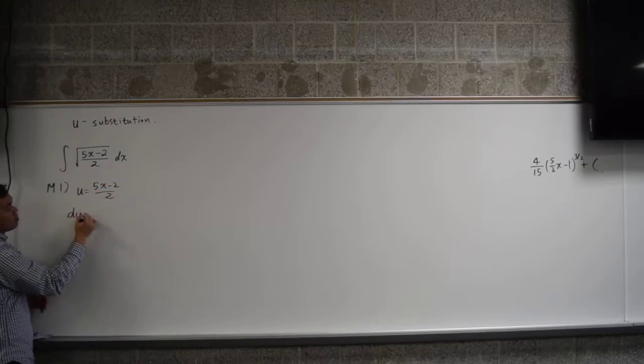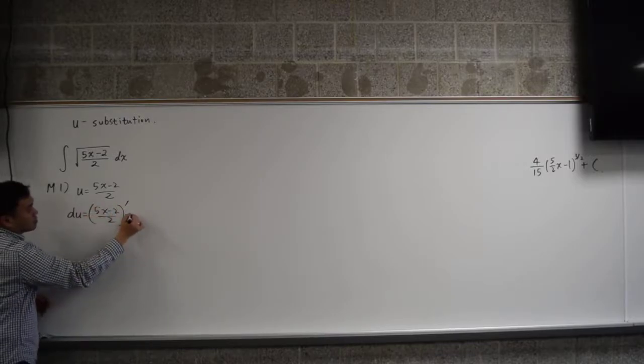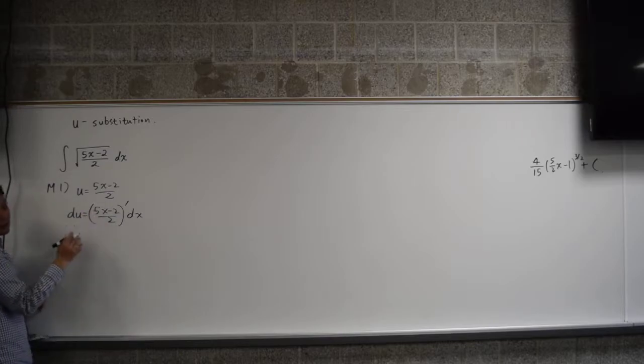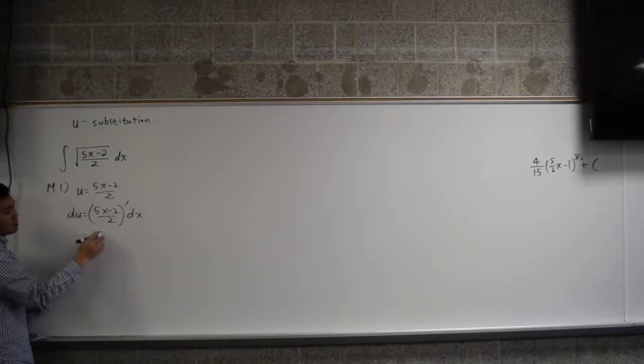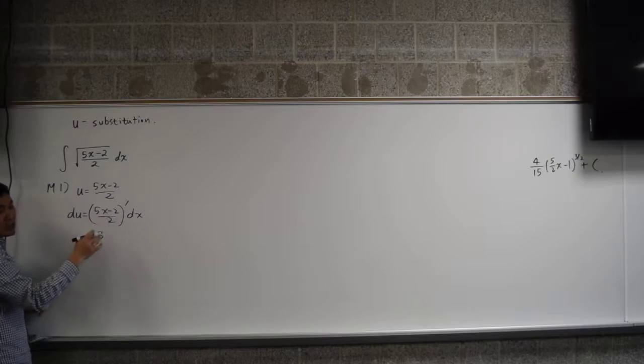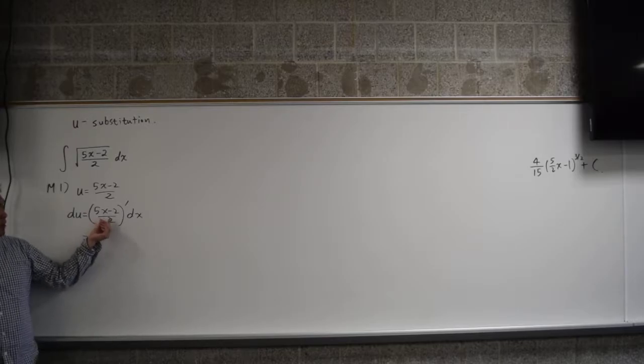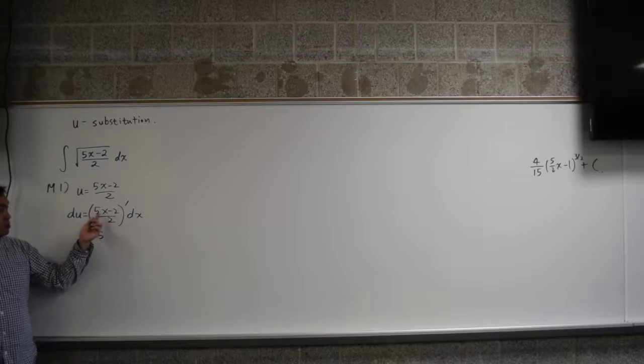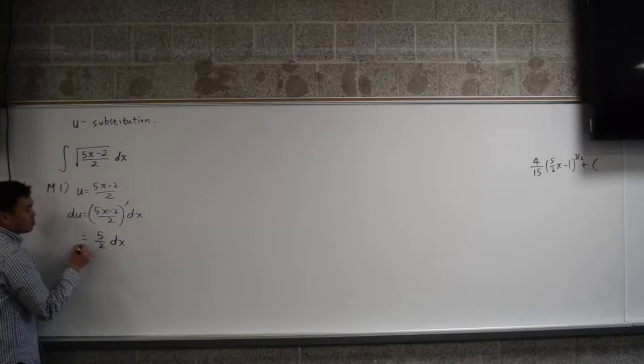So du is equal to 5x minus 2 over 2 prime dx. What's the derivative of 5x? Five, right? What's the derivative of negative 2? Zero. And this 2 in the denominator can be thought as 1 half times the entire thing, so it's really like a constant multiple. So you can bring the 1 half outside, and you're only differentiating 5x minus 2, which just gives you 5, and times 1 half will give you 5 over 2. So you get this relationship. du is 5 over 2 dx.